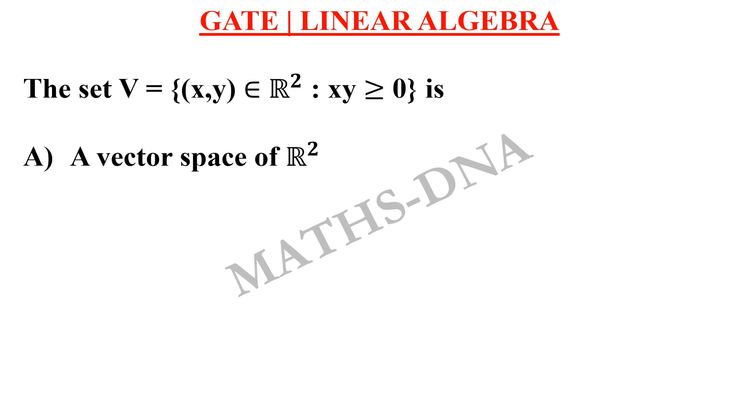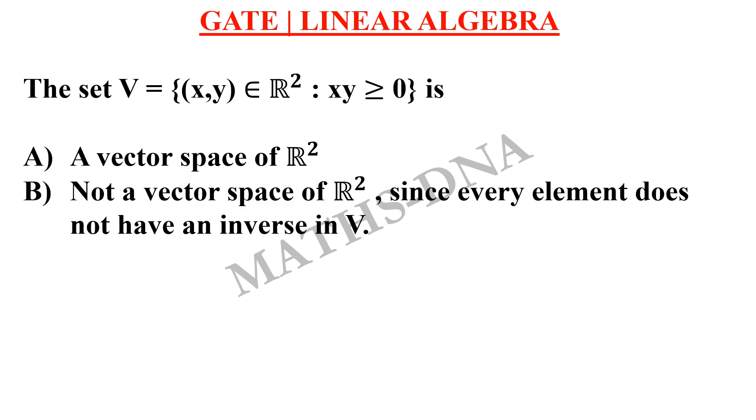The options are: A) A vector space of ℝ². Option B) Not a vector space of ℝ², since every element does not have an inverse in V.